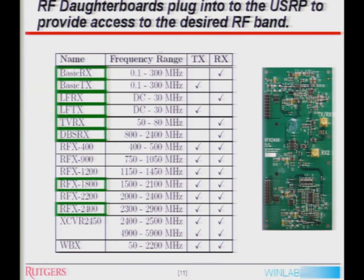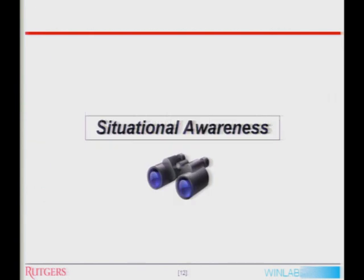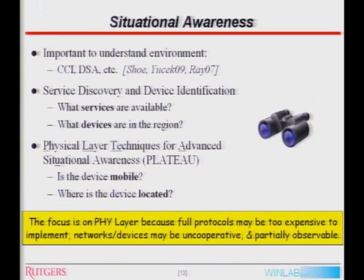The USRP itself couples with something called an RF daughterboard to provide RF access. There are many RF daughterboards providing access to different portions of the spectrum. During the course of this thesis, we used a decent amount of them, highlighted in green. Situational awareness is important in current and future wireless networks because one needs to understand the environment to optimally decide what to do in a given scenario.